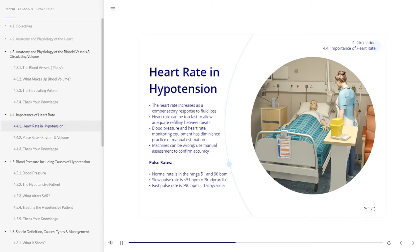The emergence of automatic blood pressure and heart rate monitoring equipment has tended to diminish the practice of manually estimating heart rate. However, machines can be wrong, particularly with arrhythmia, and therefore a manual assessment should be used to confirm the accuracy of any machine reading.